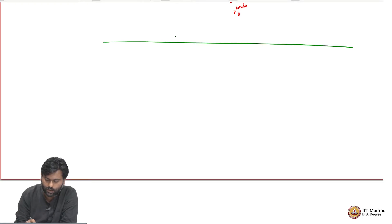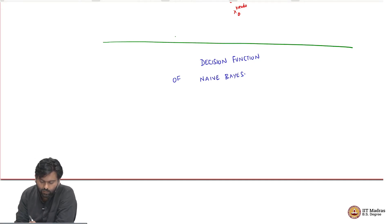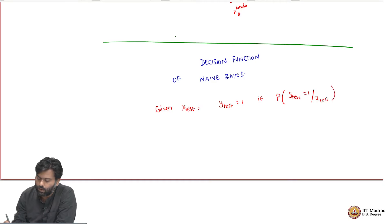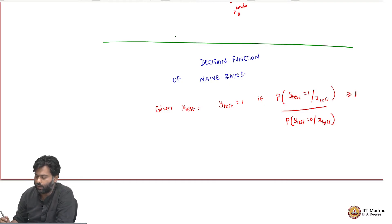What we are discussing now is the decision function of Naive Bayes. The decision function is as follows: given X_test, we say Y_test equals 1 if the probability of Y_test equals 1 given X_test is greater than the probability of Y_test equals 0 given X_test — in other words, their ratio is greater than or equal to 1. Whichever probability is greater, we predict that as the label.